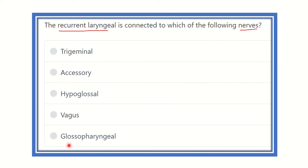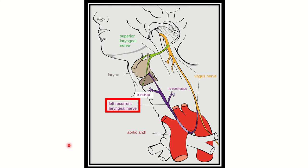Now let's see the recurrent laryngeal nerve and its origin. Here we can see a picture showing the head, face, and neck area. We can see the chest, the heart, the aorta, and the trachea projecting into the bronchi.